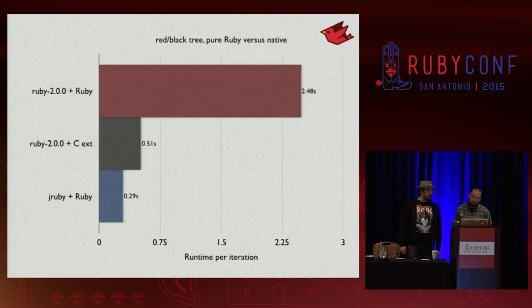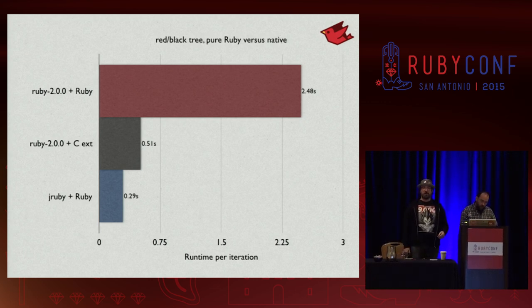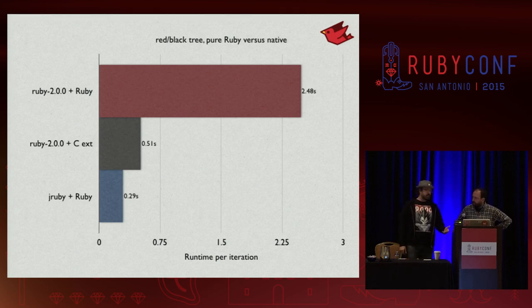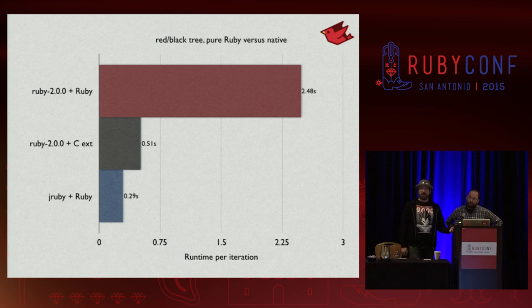Here's one of my favorite performance graphs for JRuby — a benchmark of a red-black tree library. The top bar is CRuby/MRI running a pure Ruby red-black implementation, taking about two and a half seconds. The second bar is Ruby with C extensions, getting down to about 0.5 seconds. At the bottom, JRuby running the pure Ruby red-black tree actually performs faster than CRuby with the C extension, all because of the JVM's awesome garbage collectors and optimizations.